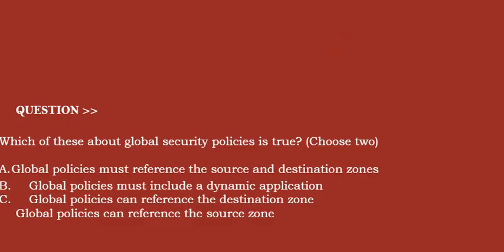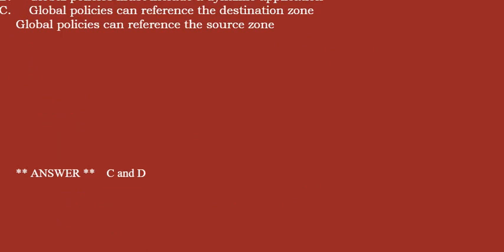Next question: Which of these about global security policies is true? Choose two options. Option A: global policies must reference the source and destination zones. Option B: global policies must include a dynamic policy applications. Option C: global policies can reference the destination zone. Option D: global policies can reference the source zone. Correct answer is option C and option D.